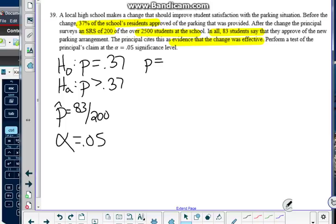So I need to make sure that I define my p naught, the parameter, is 0.37, which is the proportion of students that are satisfied with the parking situation. Okay. So take a moment to write all that up.